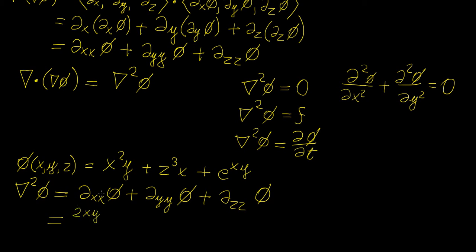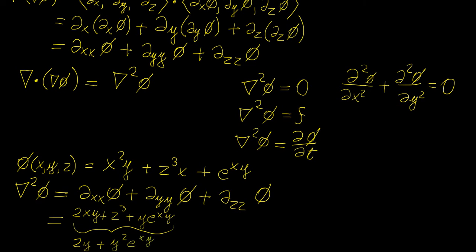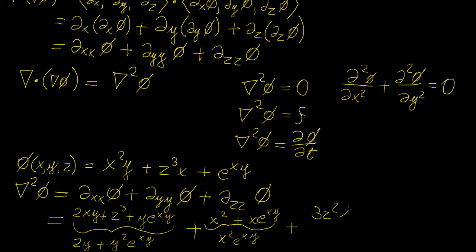For the first term, differentiating with respect to x once gives 2xy plus z cubed plus y times e to the xy. Differentiating again with respect to x gives 2y plus y squared times e to the xy. For the second term, differentiating with respect to y once gives x squared plus x times e to the xy, and differentiating again with respect to y gives x squared times e to the xy. Finally for the z term, differentiating once gives 3z squared times x, and differentiating again gives 6zx.